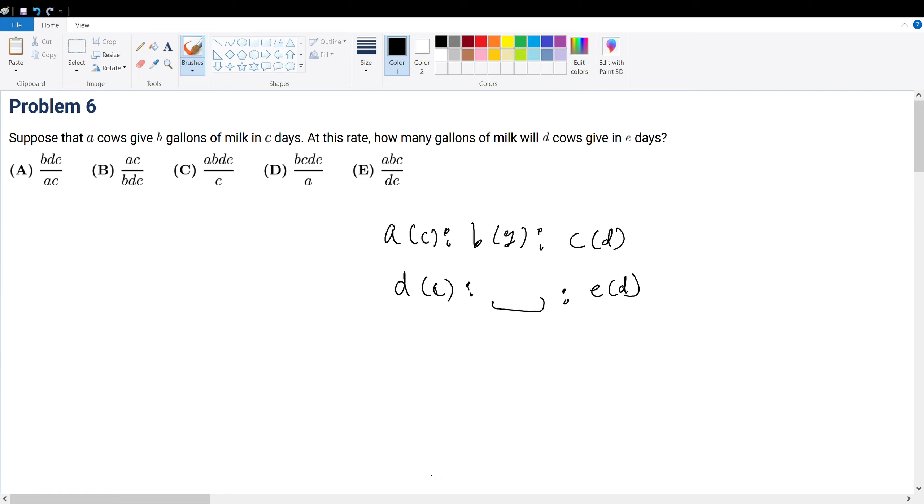Let's first consider this: if we have B gallons, how do we know the number of gallons that the D cows would make? Well, we know that for every B gallons, A cows will produce it.